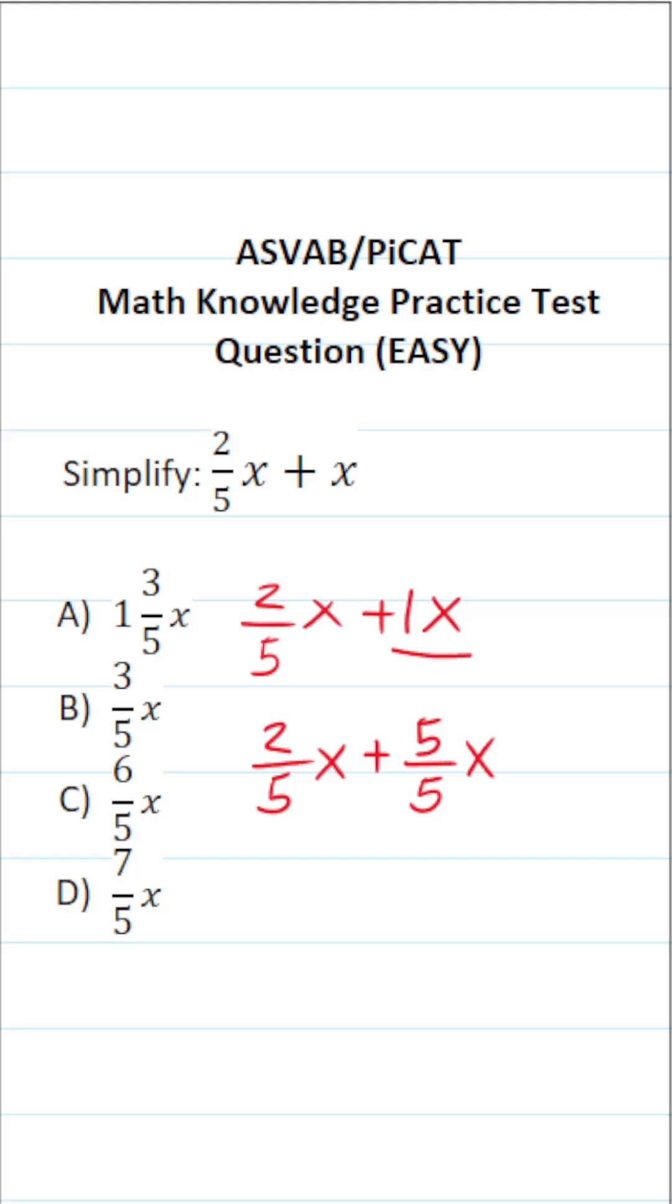Five divided by five is one. So now that these have a common denominator, we can go ahead and add them. You keep your denominator the same and then you add your numerator. So this becomes two plus five. Two plus five is seven. So this is seven over five x. So the answer to this one is clearly D.